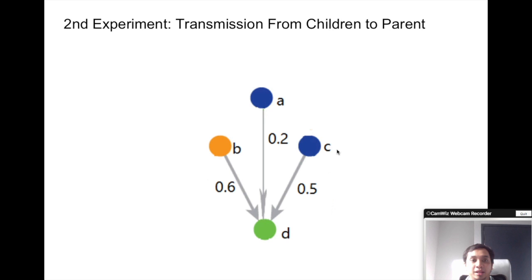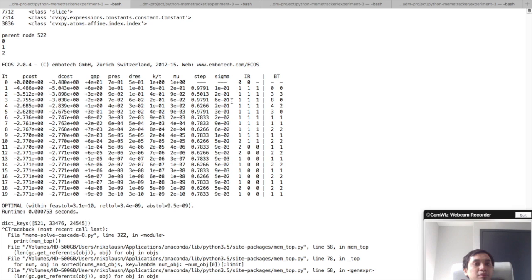Our second experiment is predicting transmission rate from children to parent. With this experiment, we can infer how strong the relationship is between one child that has so many parents.